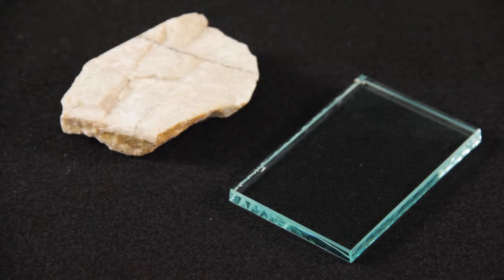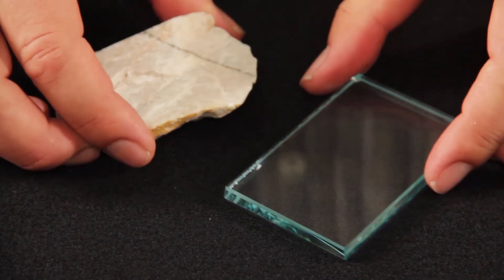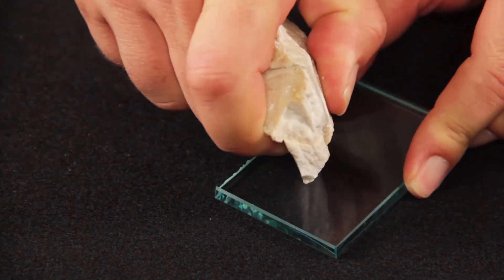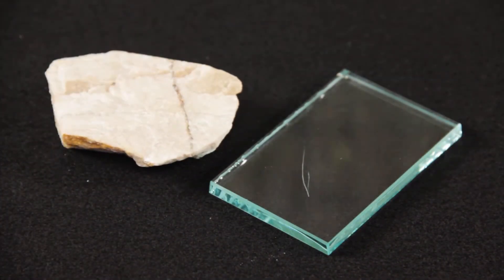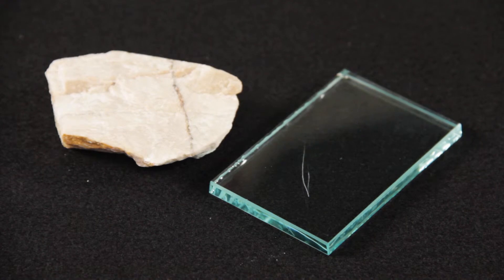Another feature that is important for identifying feldspar is its hardness. Feldspar has a hardness of 6 on the Mohs hardness scale, which means that it should be able to scratch glass. However, since feldspar is a 6 on the scale and glass is a 5.5, the feldspar is only a little bit harder than the glass, and so sometimes it takes some effort to get a good scratch, but it will be there.